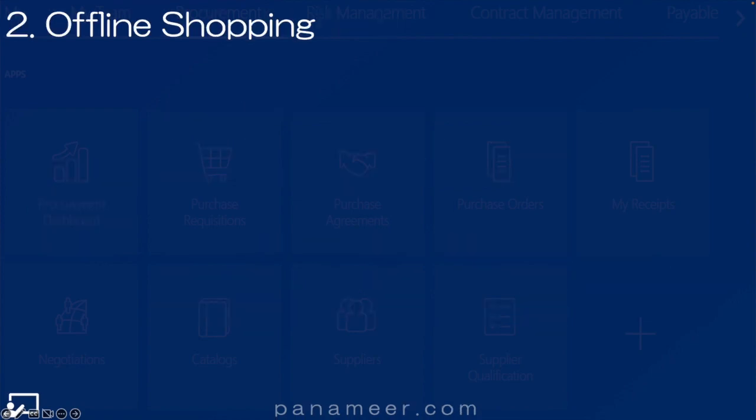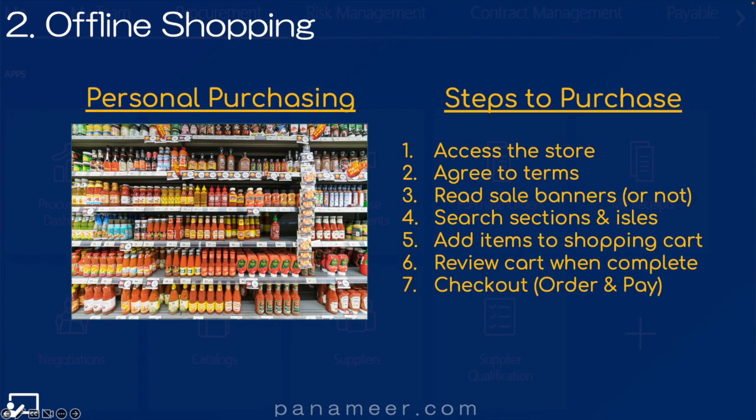Slide number two: offline purchasing. This is just everyday shopping in a store. Here are the steps if we actually drew them out that we use when we purchase in an offline world: we access the store, we inherently agree to terms, we read banners or not, we search the sections and the aisles, then we add items to a shopping cart, and we check out.